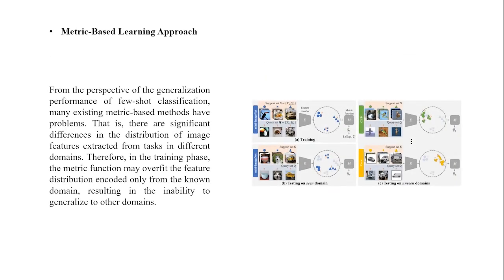From the perspective of the generalization performance of few-shot classification, many existing metric-based methods have problems. That is, there are significant differences in the distribution of image features extracted from tasks in different domains. Therefore, in the training phase, the metric function may overfit the feature distribution encoded only from the known domain, resulting in the inability to generalize to other domains. To solve the cross-domain problem, the core idea is to use a feature-based transformation layer to enhance image features through offline transformation in the training phase to simulate various feature distributions in different domains, thereby improving the generalization ability of the metric function in the test phase.